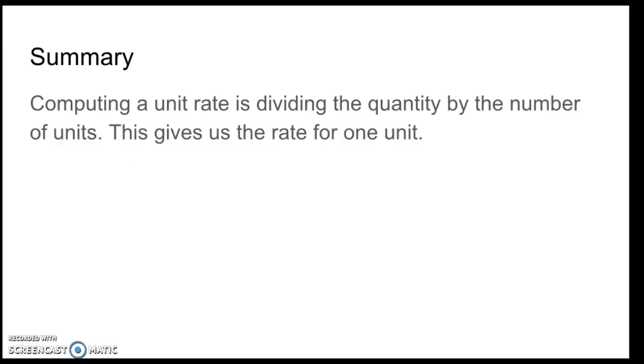Summary. Computing a unit rate is dividing the quantity by the number of units. This gives us the rate for one unit. It's pretty simple.